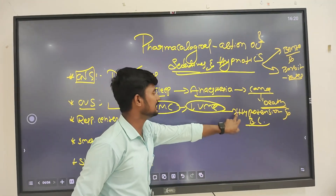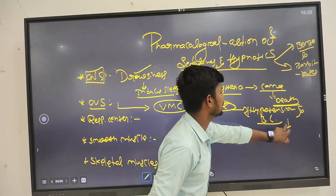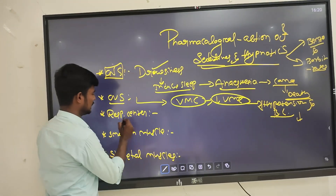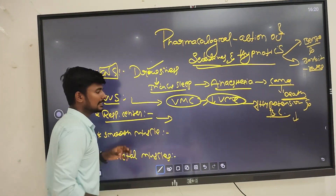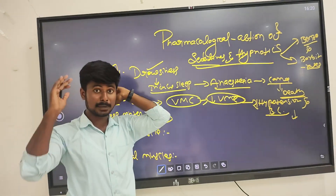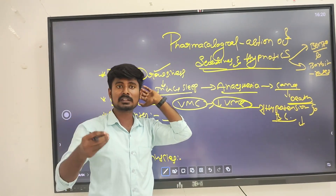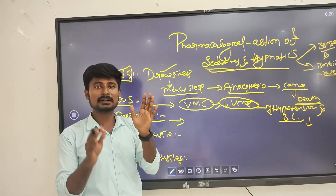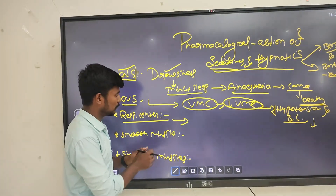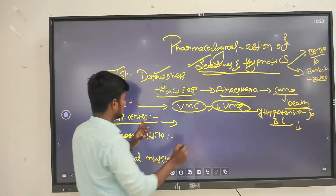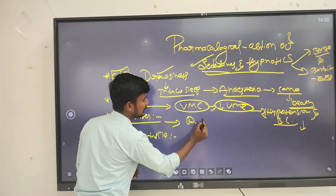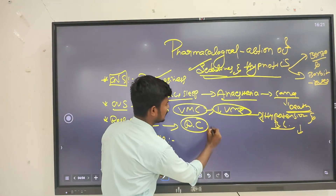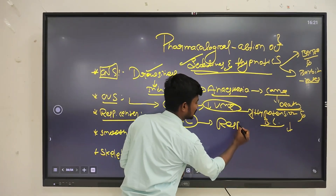There is a decrease in blood pressure and reduction in heart rate under CVS effects. Then the respiratory center, which is present in the medulla oblongata and is responsible for helping the patient take 16 to 18 breaths per minute. When this drug is given, it suppresses the respiratory center in the medulla oblongata, leading to respiratory depression.